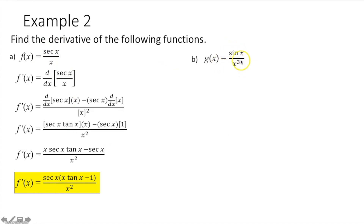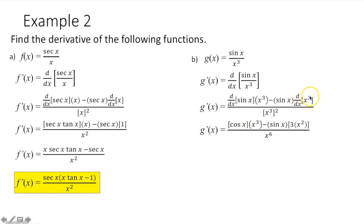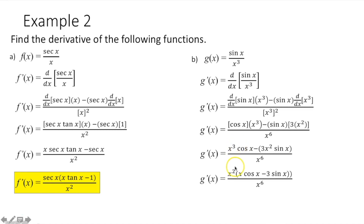For part b, we again have two functions being divided, so we use the quotient rule: derivative of numerator times denominator, minus numerator times derivative of denominator, all over denominator squared. Derivative of sine x is cosine x, and derivative of x³ is 3x². The denominator x³ squared gives x⁶. Simplifying: cosine x times x³ minus sine x times 3x², over x⁶. Each term in the numerator has an x² we can factor out, which then cancels with x⁶ in the denominator, leaving x⁴ in the denominator, and we're done.